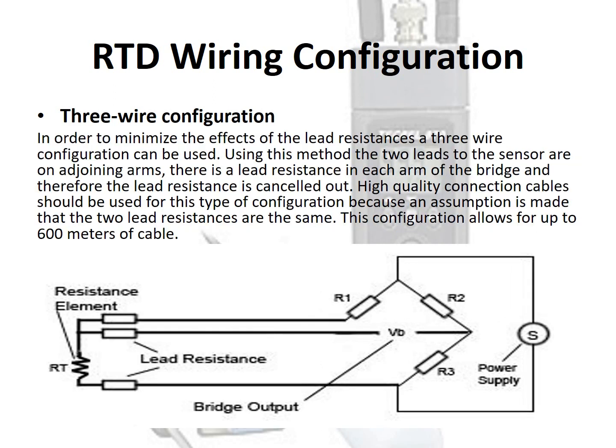In order to minimize the effects of lead resistances, a 3-wire configuration can be used. Using this method, the two leads to the sensor are on adjoining arms, with a lead resistance in each arm of the bridge, and therefore the lead resistance is cancelled out. High quality connection cable should be used because an assumption is made that the two lead resistances are the same. This configuration allows for up to 600 meters of cable.